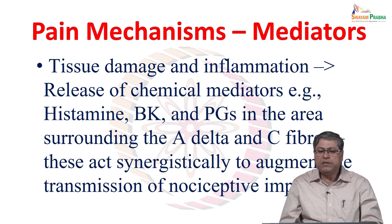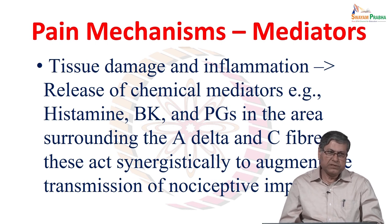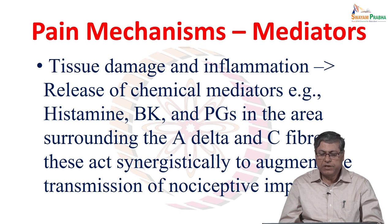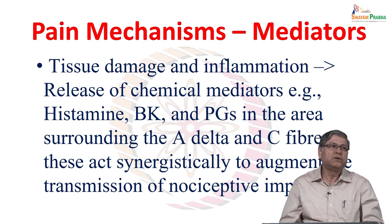Let us talk about the specific mediators for pain. When tissues are damaged — cells damaged at the periphery or deeper structures — there is a local inflammation. We all know the different cardinal signs of inflammation: calor, rubor, dolor, tumor, and loss of function. Out of these, dolor means pain. Whenever there is inflammation there will be pain simultaneously, because the same mediators that cause inflammation also cause pain. As a result of inflammation, chemical mediators — histamine, bradykinin, and prostaglandins — are released in the area surrounding the A-delta and C fibers, and these mediators act synergistically to augment the transmission of nociceptive impulses.